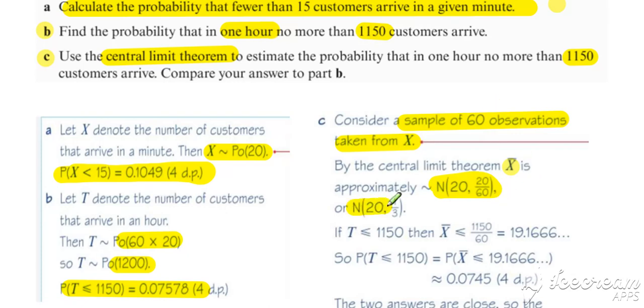So we've got, under the central limit theorem, we've got its normal approximation. Now, we don't want to work out the probability of it being less than 1,150 now. We want to work out the probability that X bar, the average number of observations for each one minute period, so we need to divide that by 60. So we want to work out the probability that X bar is less than 1,150 divided by 60.